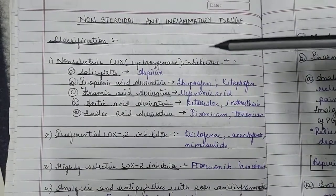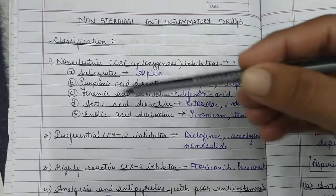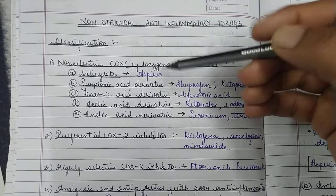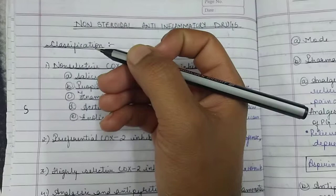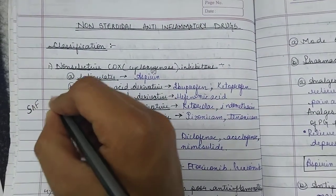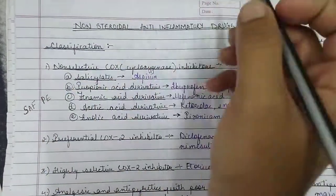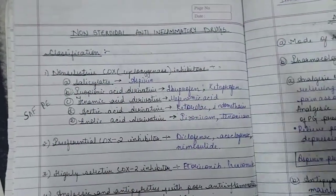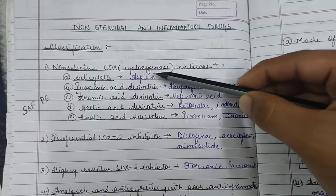Non-selective COX cyclooxygenase inhibitors - the first classified category. We are going to start with salicylates. I have made a short mnemonic that is SAFI-PILO. S is for salicylates, which is basically aspirin.